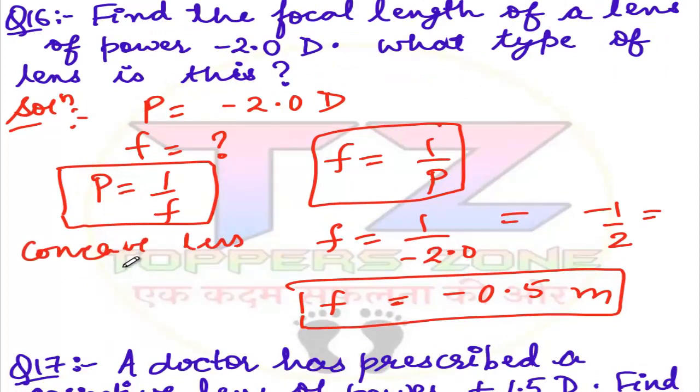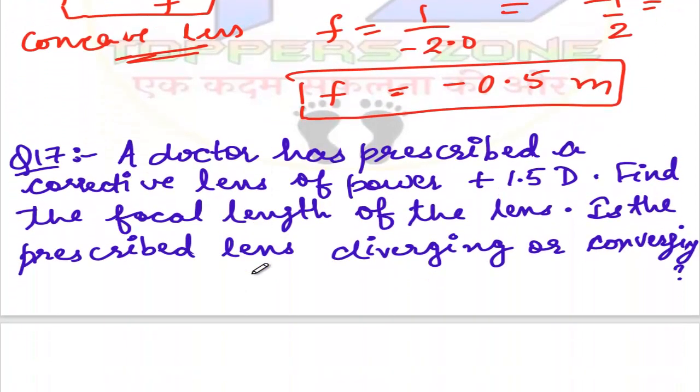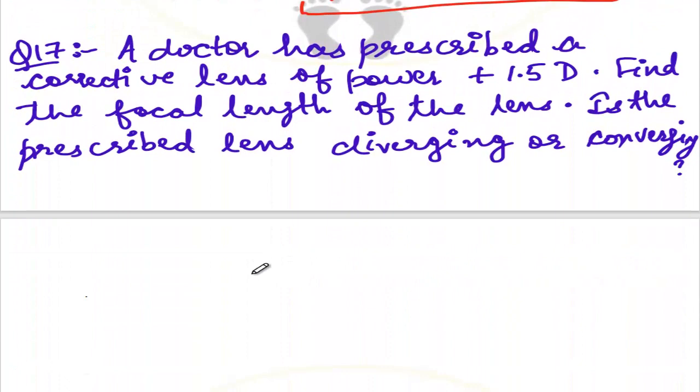Next question, look at question number 17. A doctor has prescribed a corrective lens of power plus 1.5 diopter. Find the focal length of the lens. Is the prescribed lens diverging or converging? Same equation - now you have to do it the same way as question 16. Here we have power negative before, here we have power positive, and focal length to find out. Same formula applies here.